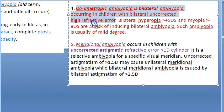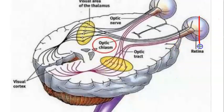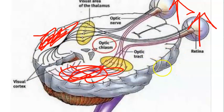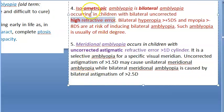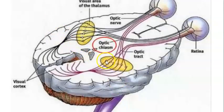Isoametropic amblyopia is bilateral amblyopia — both eyes have not developed vision properly because both eyes have high refractive error. Both sides the vision did not develop properly. This occurs with greater than plus five diopters of hypermetropia or greater than minus eight diopters of myopia, causing bilateral amblyopia. Interestingly, this bilateral amblyopia is of mild degree.